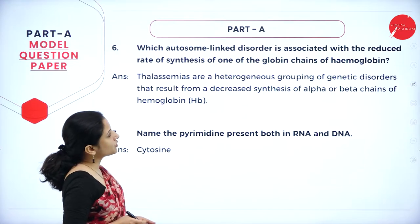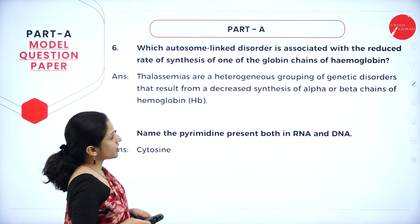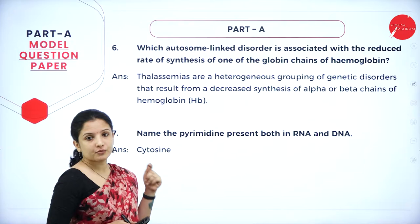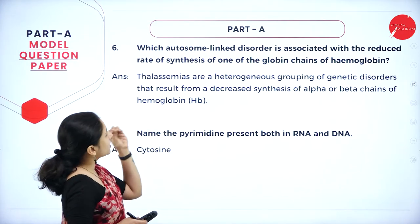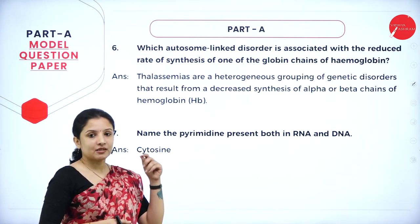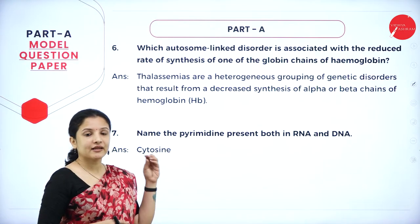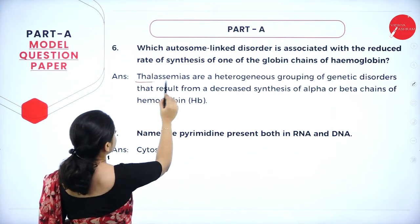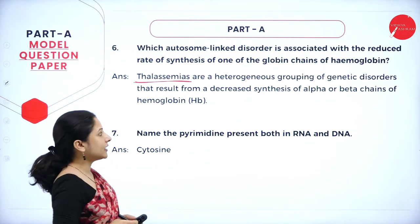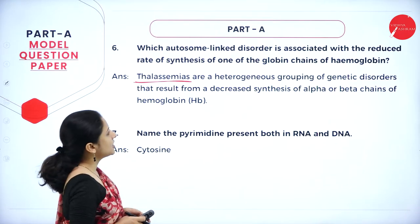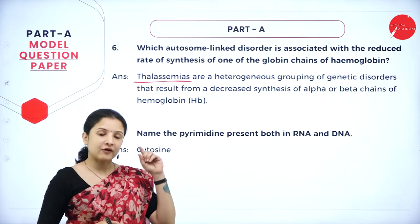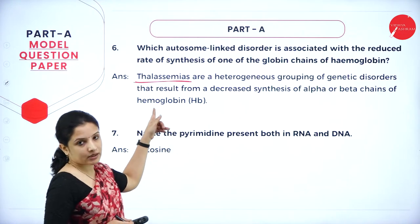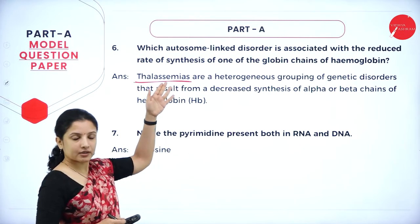Question 6: the autosome-linked disorder associated with reduced synthesis of one of the globin chains of hemoglobin is Thalassemia. In hemoglobin we have alpha and beta chains; if either chain's production is reduced or absent, thalassemia results. Simply write 'thalassemia' as your answer.